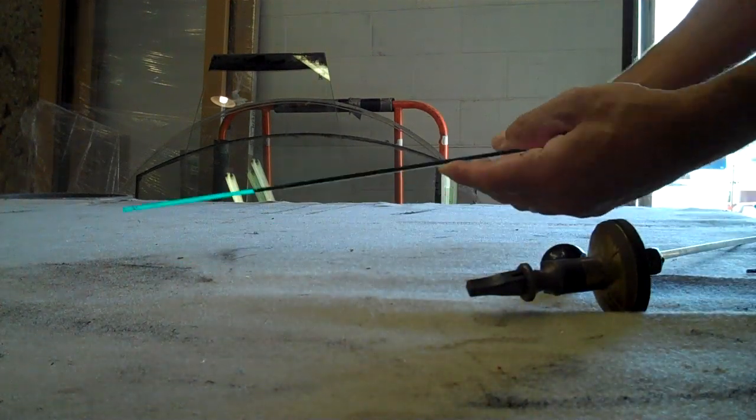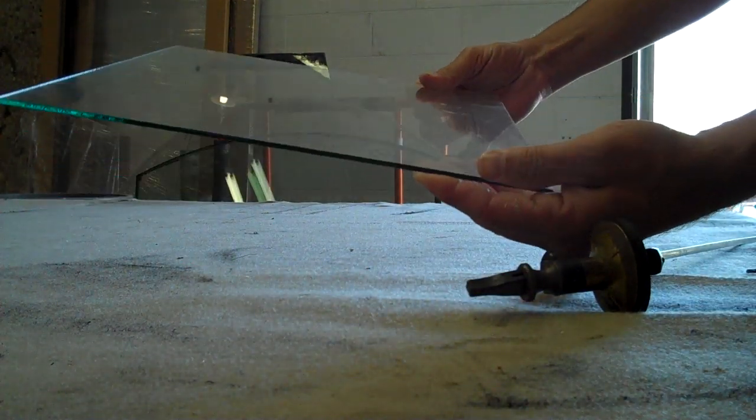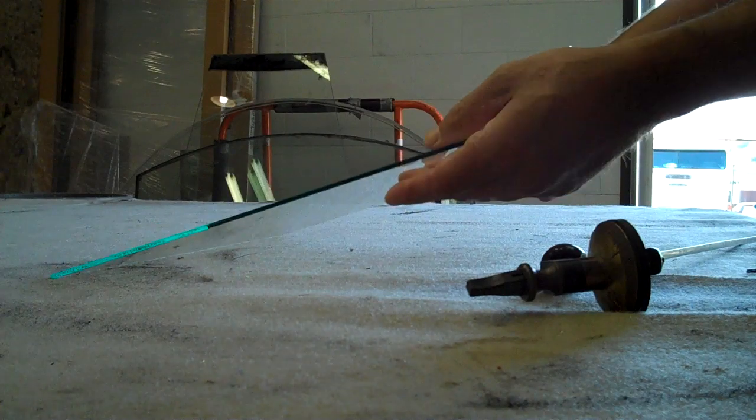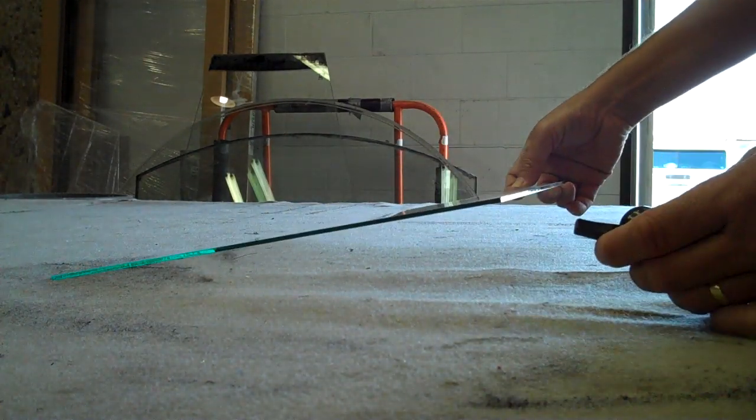Today I'm going to cut into a piece of double strength glass. Double strength just means it's an eighth of an inch thick. This is a scrap piece I have. I'm just going to cut a piece and show you how I do it.